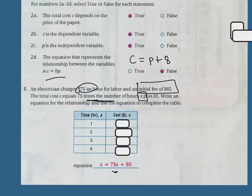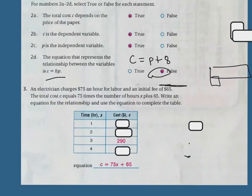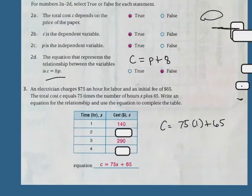Now if I plug in 1 for 1 hour, I'm going to get C equals 75 times 1, because I'm plugging in 1 for X, plus 65. So 75 times 1 is 75, plus 65 is 140.